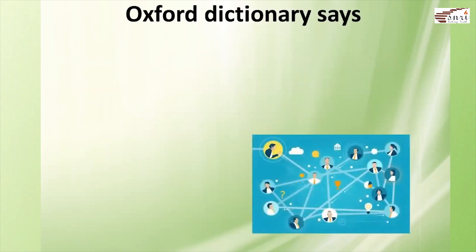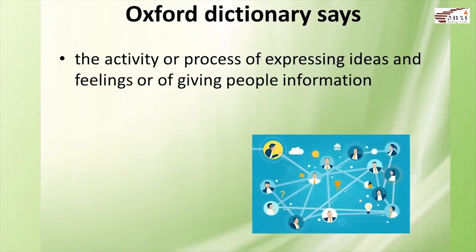Let us take a look at some of them. When it comes to communication, the Oxford Dictionary says that it refers to the activity or process of expressing ideas and feelings or of giving people information. Let us analyze this properly. First, 'activity or a process of expressing ideas and feelings' appears to be quite a general statement — it doesn't give us any concrete aspect or information. And referring to it as a process wherein people give information also becomes very general and vague.